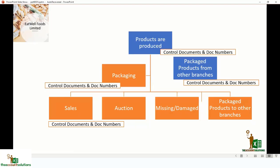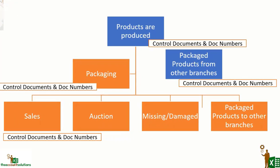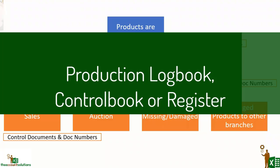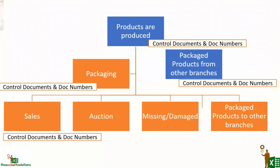For each of these processes there are documents and document numbers that you should take note of — whether you are a data entry staff, accountant, clerk, or salesperson using these templates. When the production unit is done with production, they will raise a control document, which could be a log book, control book, or production register. That document will have serial numbers. At the point of transferring that batch of production — it could be a batch number, batch log, or shift number — you should post them with the numbers on that particular document.